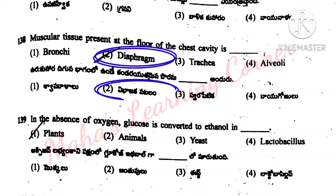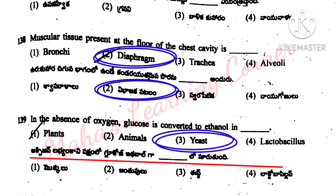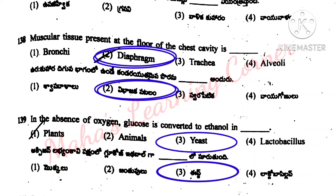Diaphragm. Next, in the absence of oxygen, glucose is converted to ethanol in: plants, animals, yeast, Lactobacillus. Correct answer is option 3: yeast.